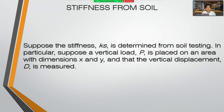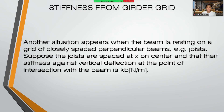The stiffness from soil: suppose the stiffness is determined from soil testing. In particular, suppose a vertical load is placed on an area with dimensions X and Y and the vertical displacement is measured. Stiffness from girder grid: another situation appears when the beam is resting on a grid of closely spaced perpendicular beams. For example, suppose the joists are spaced at X on center and that there is stiffness against vertical deflections at the point of intersection with the beam.